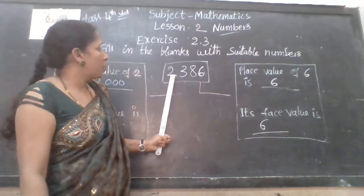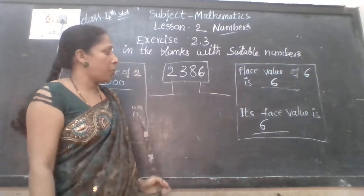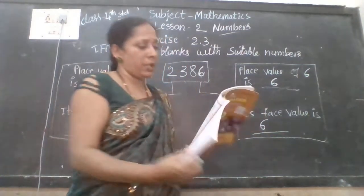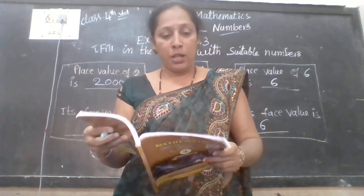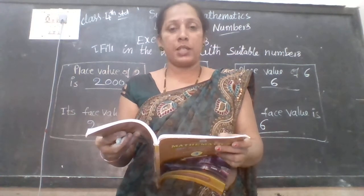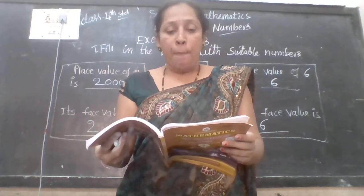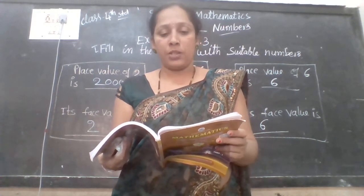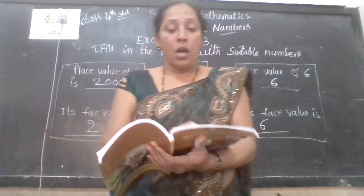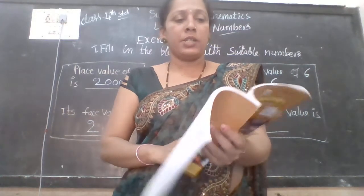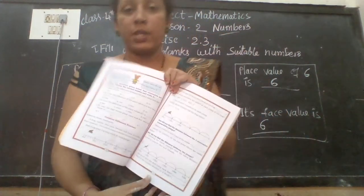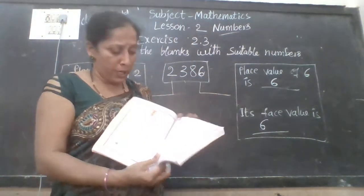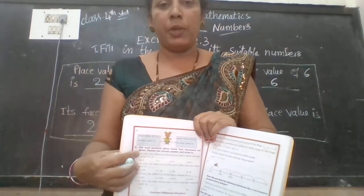Like that, 2,386 is the number. You have to observe properly and correctly. They have given another one — see page number 30, number 3,093. Place value of 3 is dash, its face value is dash. And again, place value of 3 is dash, its face value is dash. Observe the arrow mark and write the place value and face value of 3. Left side is different, right side is different. You have to do yourself. Write in your notebook and submit to the assignment group.